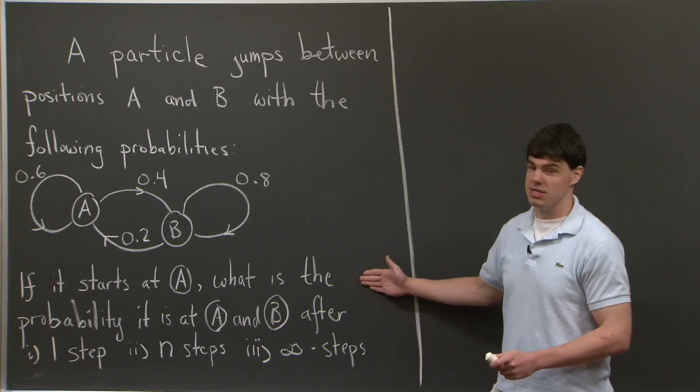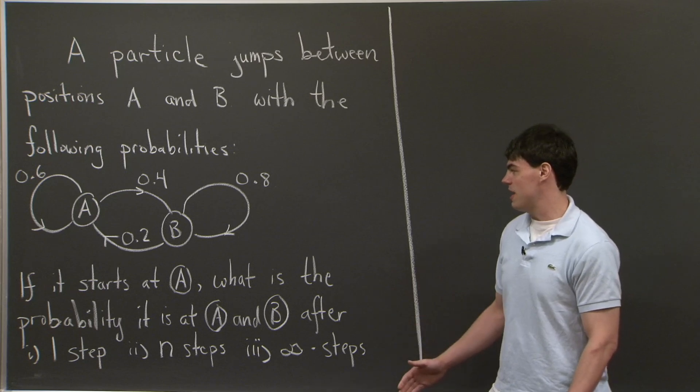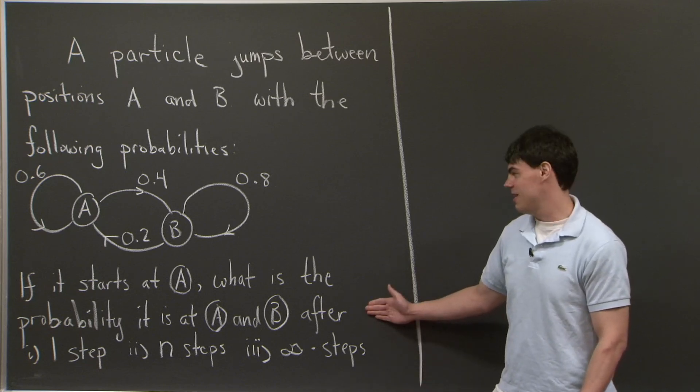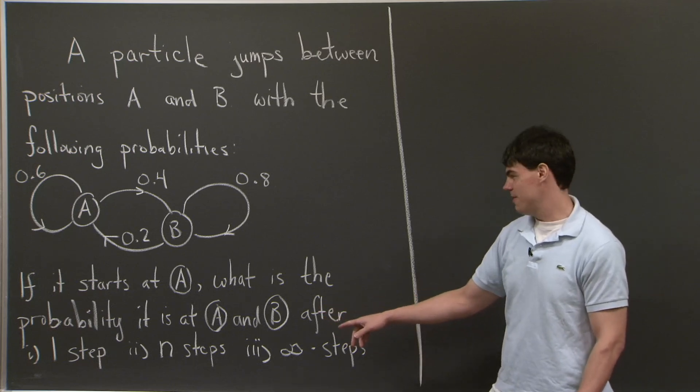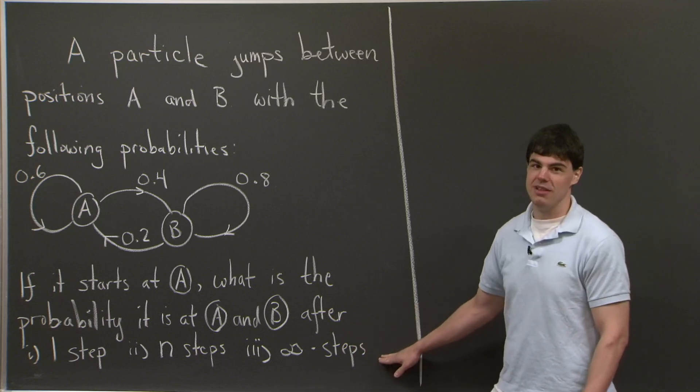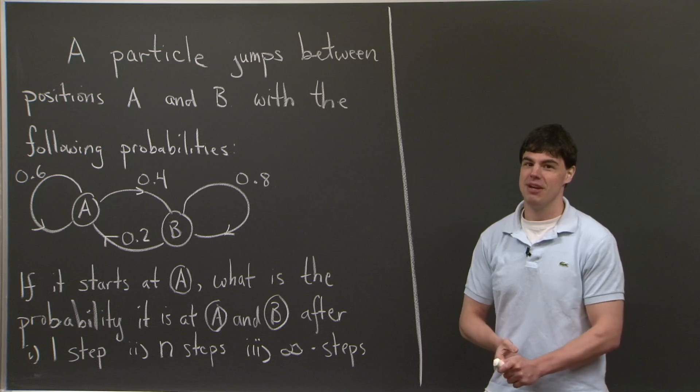So specifically, the problem we're interested in today is if we have a particle and we know that it starts at position A, what is the probability that it is at position A and the probability that it's at position B after one step, after n steps, and then finally after an infinite number of steps. So I'll let you think about this problem for a moment, and I'll be back.